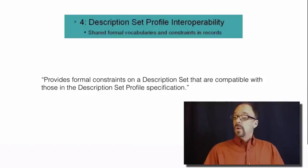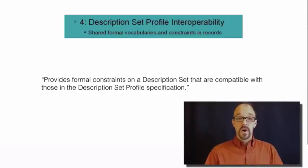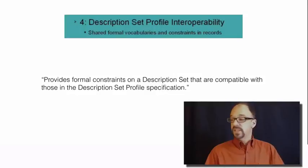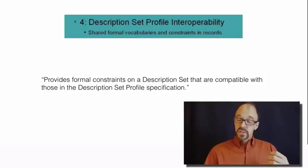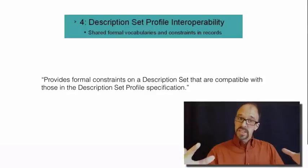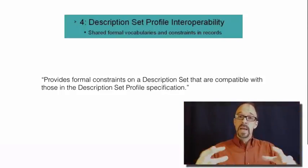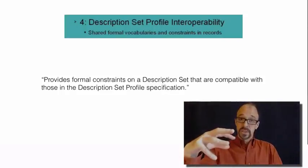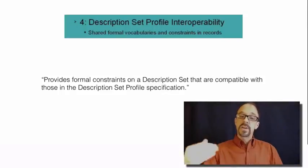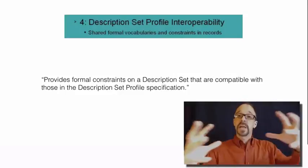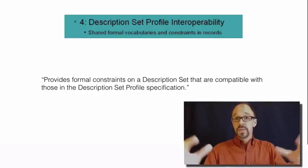Level four interoperability is the most formal of all — it must comply with the Dublin Core description set constraints. From the abstract model, a description set is the set of all statements you make about a resource, and a metadata record is made up of one and only one description set. So level four articulates constraints on how to create a description set — in other words, constraints on how a metadata record should be constructed.